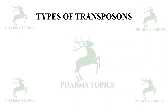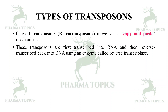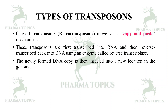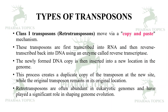There are different types of transposons. Class 1 transposons, also called retrotransposons, move via a copy-and-paste mechanism. They are first transcribed into RNA, then reverse transcribed back into DNA using an enzyme called reverse transcriptase. The newly formed DNA copy is inserted into a new location in the genome, creating a duplicate copy while the original remains in place. Retrotransposons are abundant in eukaryotic genomes and have played a significant role in shaping genome evolution.